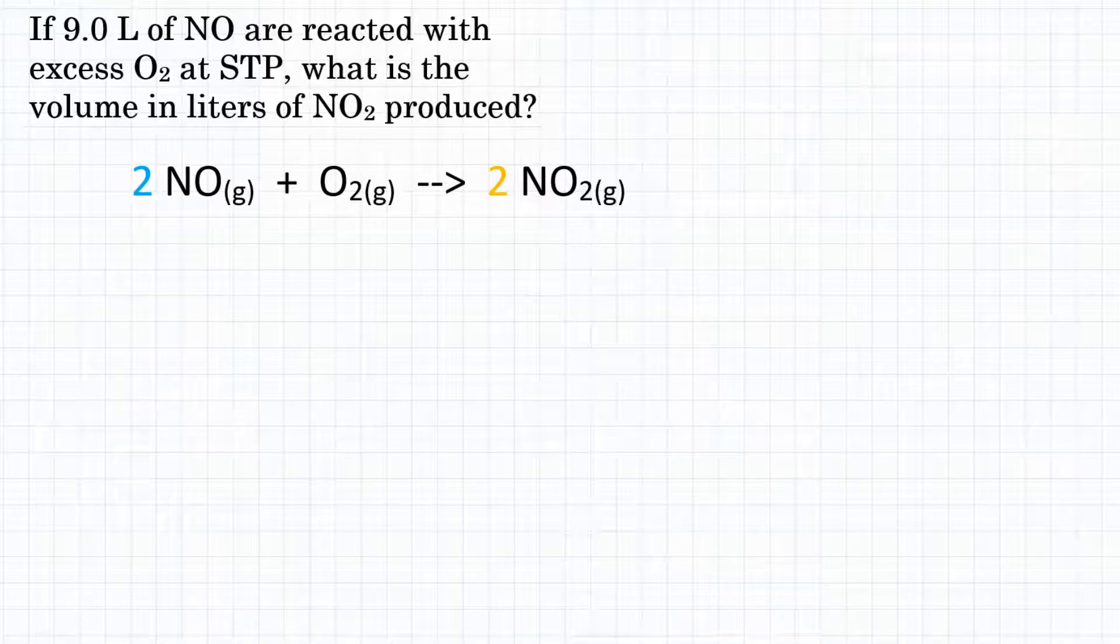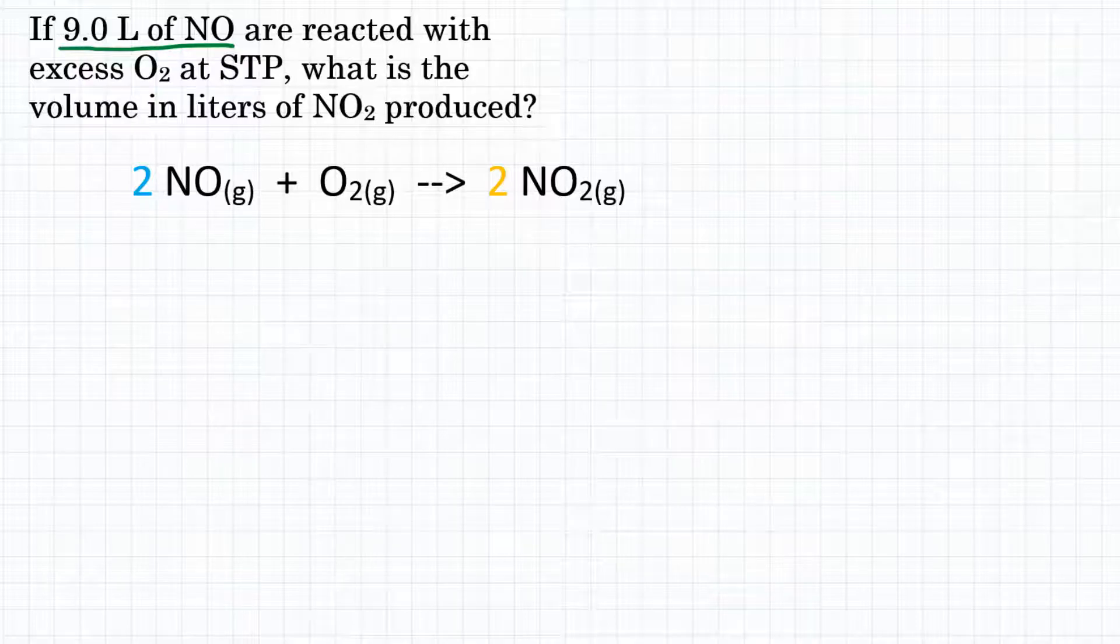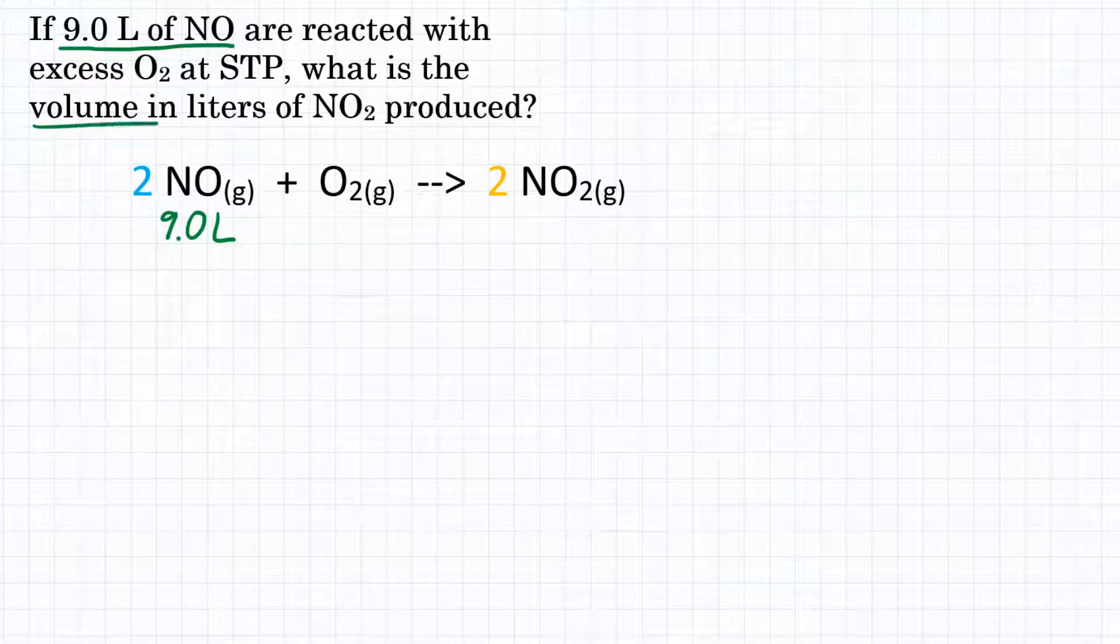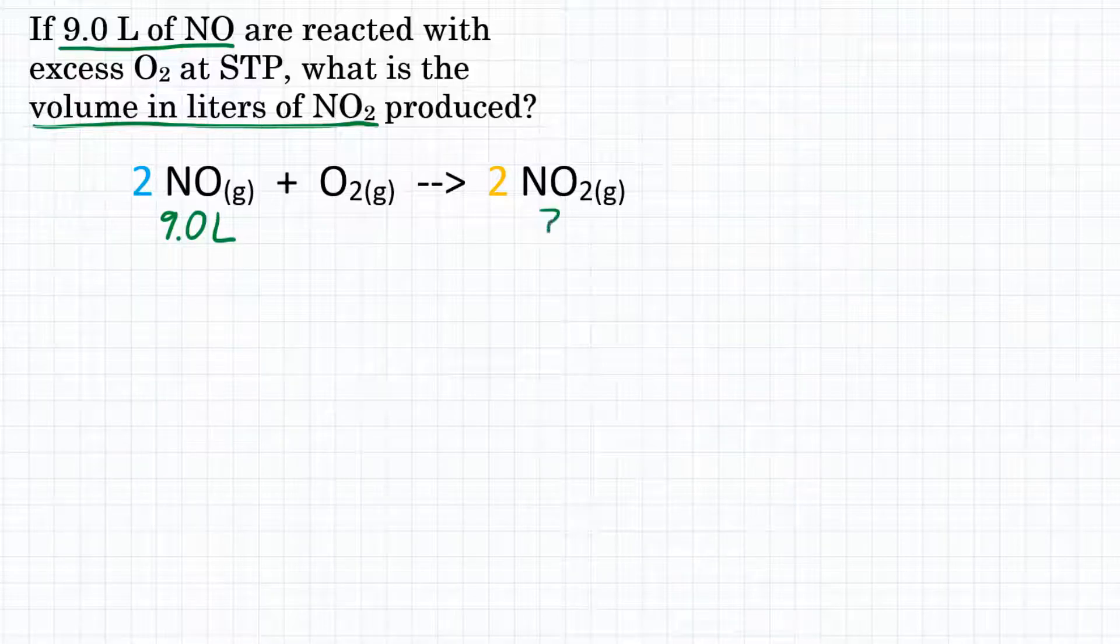So as always, what does the problem give us? Well, we get 9.0 liters of NO, so let's write that under NO in our chemical equation, 9.0 liters. And what are we looking for? We are looking for the volume in liters of NO2 produced. So how many liters of NO2 will 9.0 liters of NO produce if it reacts as this chemical equation shows?